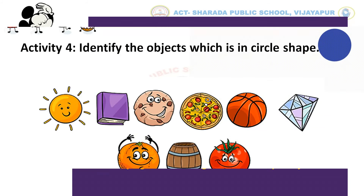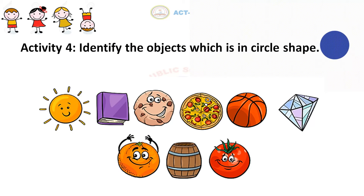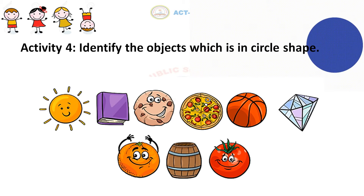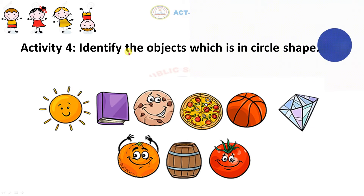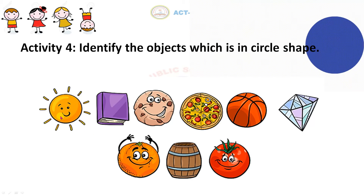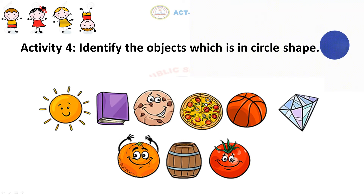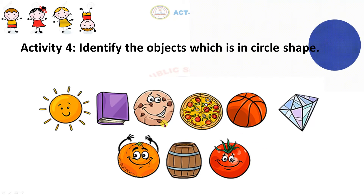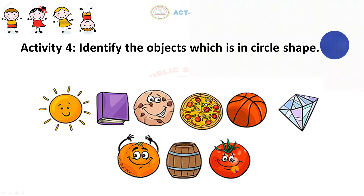Kids, let's do the fourth activity. That is, identify the objects which are in circle shape. Children, can you tell me which are the pictures that are in circle shape? Yes, repeat it. Kids — sun, cookies, pizza, ball, orange, and tomato.